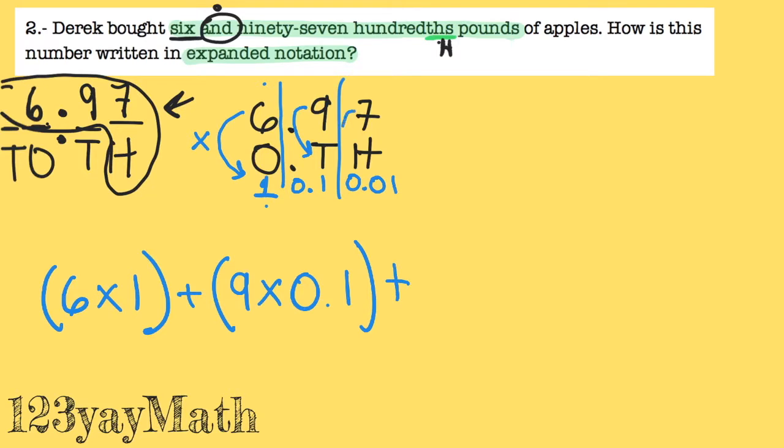Plus this times this. Open parenthesis, seven times 0.01. And now how I'm going to check if I am right. It's very simple.